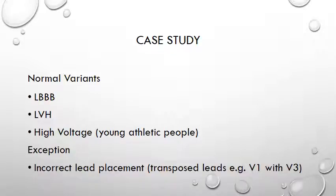Some normal variants to consider with tall T waves in V1: in left bundle branch block, left ventricular hypertrophy, and high voltage — particularly in young athletic people — you will often get a positive, possibly tall, T wave in V1, and these are normal. There is also an exception where incorrect lead placement can produce a positive T wave in V1, usually where the leads have been transposed, so you should check leads V1 and V3 to make sure they are not the wrong way around.